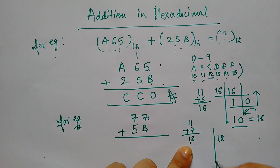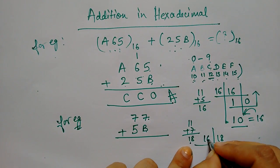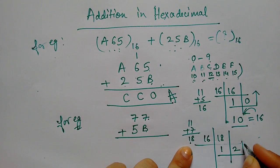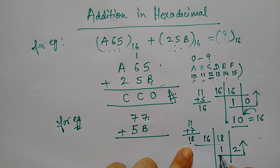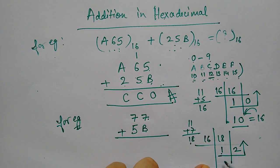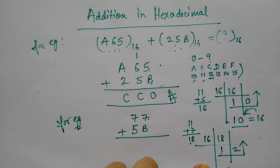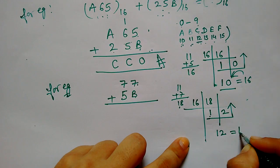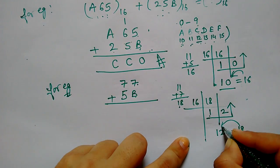Now, 18 is in decimal. What do you do? We will divide it from 16. 16 is 1 and 2 is remainder and we will copy it in this direction. What will be hexadecimal conversion?